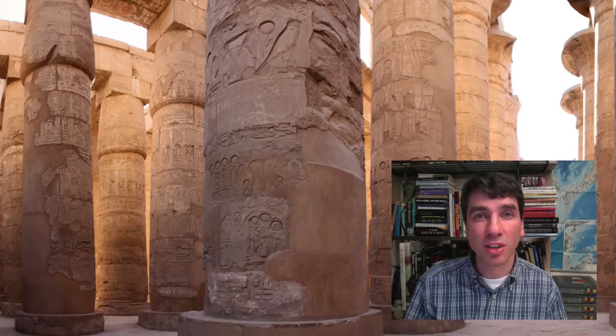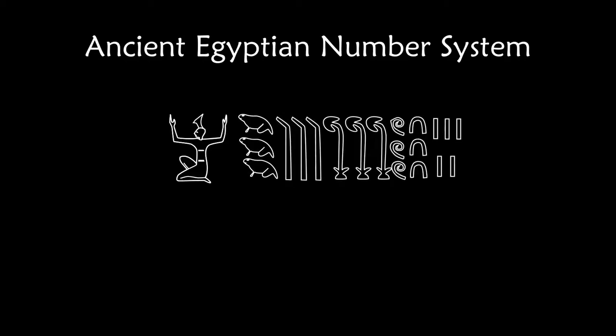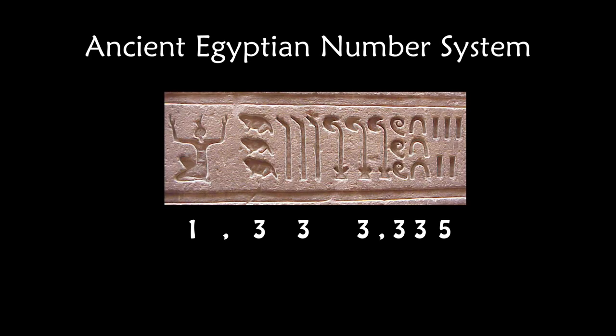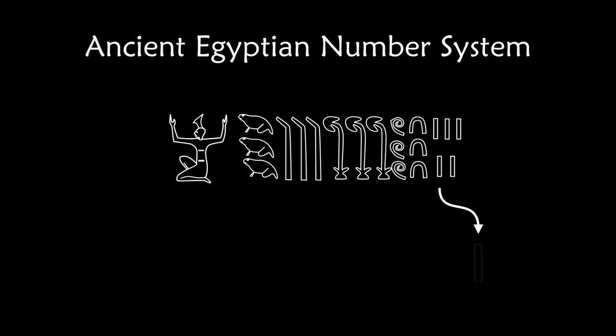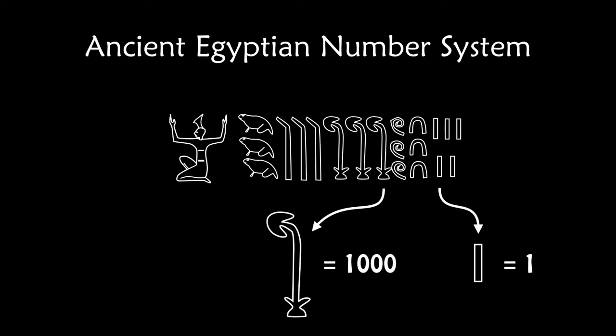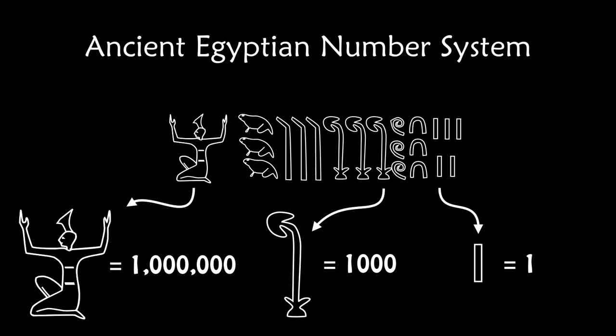We're going to start by looking at the ancient Egyptian number system using hieroglyphs. If you recorded numbers in ancient Egypt, you would be using symbols. This number is 1,333,335. Here it is on a wall. The staff is worth 1. The lotus, 1,000. The god with outstretched arms, 1,000,000. If there was an ancient Egyptian in our crowd, they would be wondering why on earth are you guys using the same symbol, 1, for 1, 1,000, and 1,000,000?